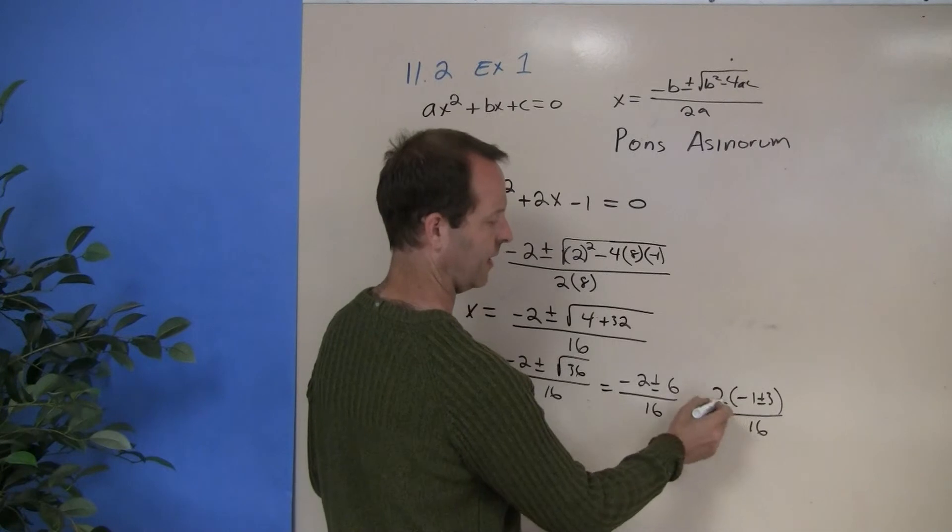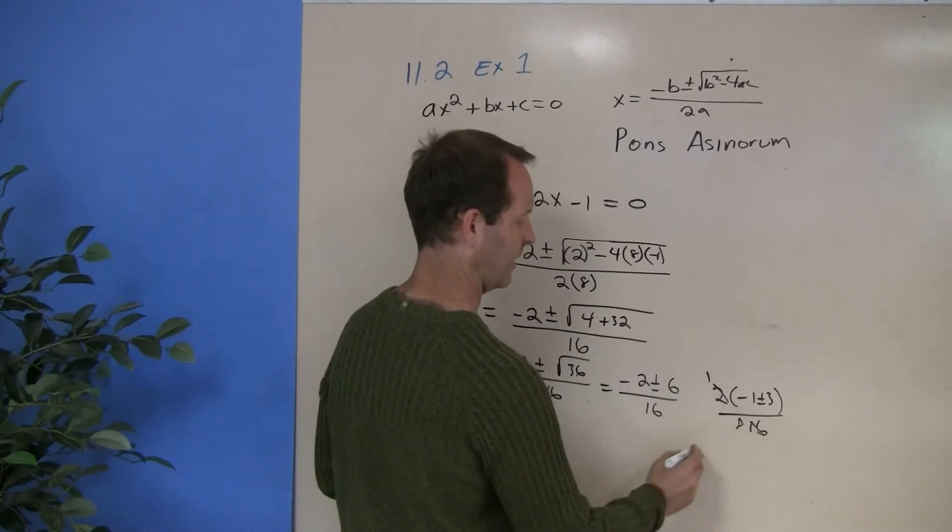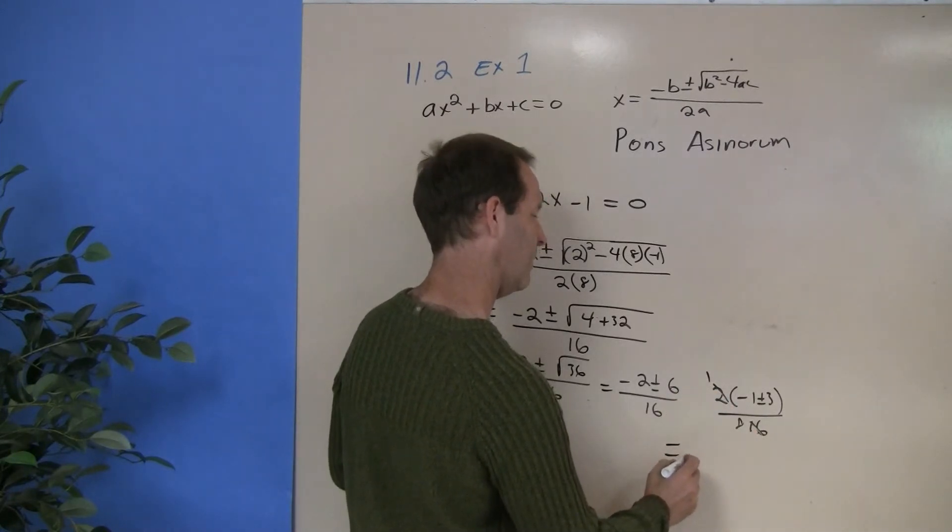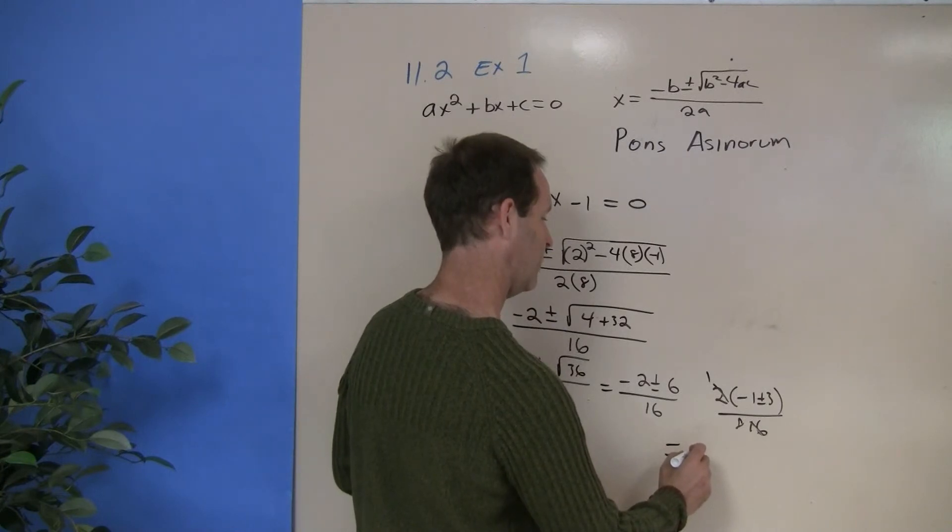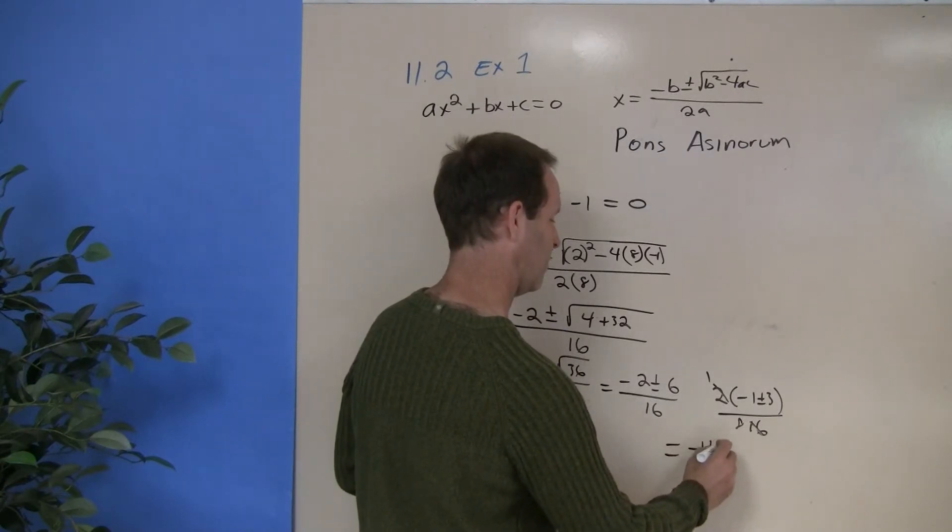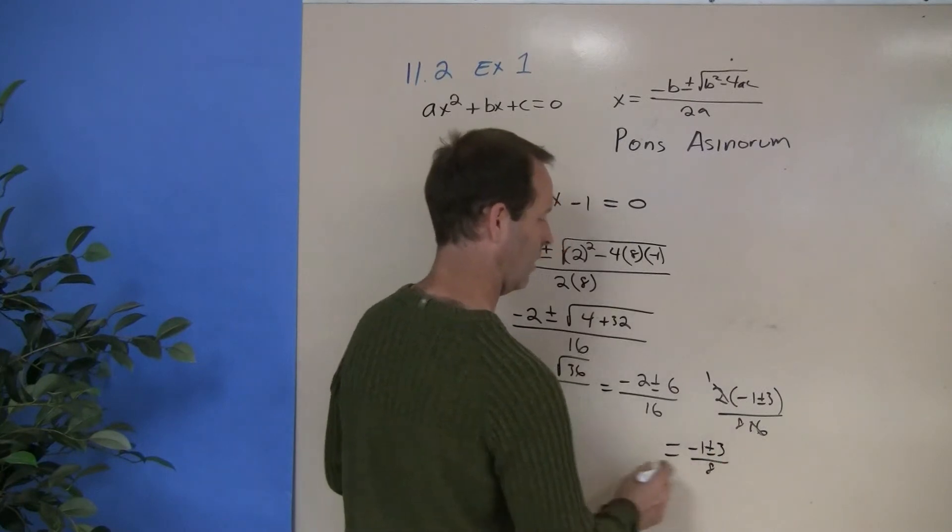All I was doing is just trying to find a little bit of a way to reduce that. A 2 and a 16, that becomes a 1 and an 8, and I'm left with minus 1, plus or minus 3, all over 8.